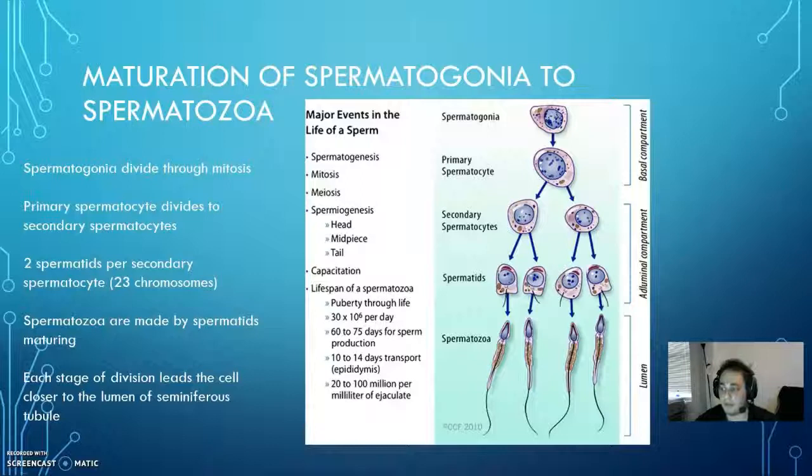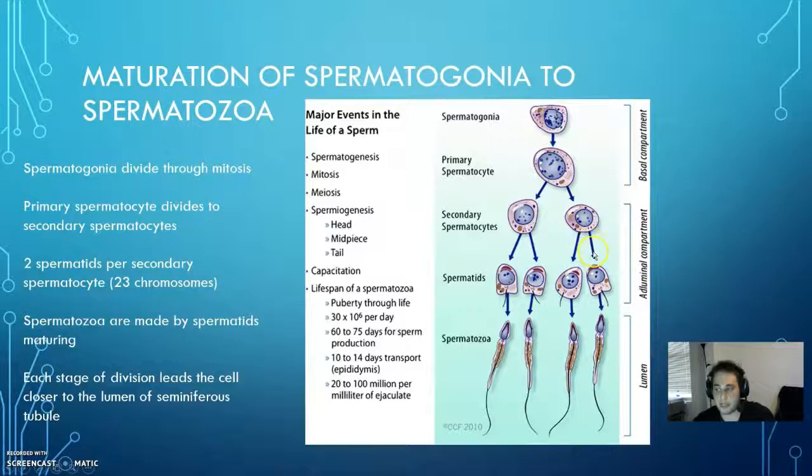In this whole process, you're able to produce around 1,500 to 2,000 sperm per second, which requires a lot less energy than a female producing a single egg, which takes a whole month.